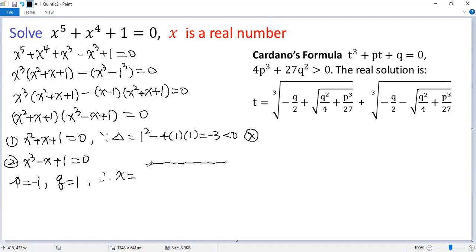So x equals negative q over 2 plus the cubic root of q squared over 4 plus p cubed over 27. We know p to the power of 3 equals negative 1, so it would be minus 1 over 27.